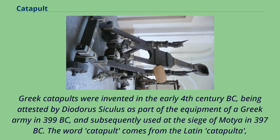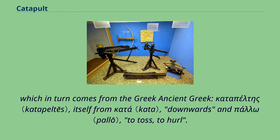Greek catapults were invented in the early 4th century BC, being attested by Diodorus Siculus as part of the equipment of a Greek army in 399 BC, and subsequently used at the siege of Motya in 397 BC. The word catapult comes from the Latin catapulta, which in turn comes from the ancient Greek.